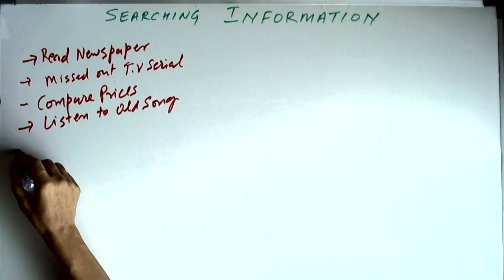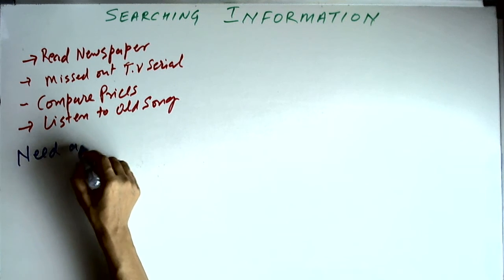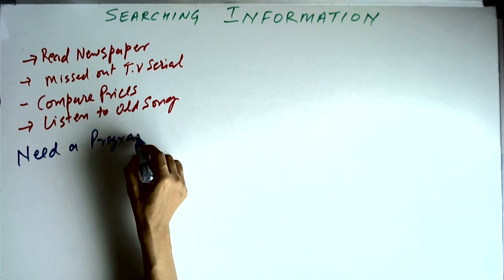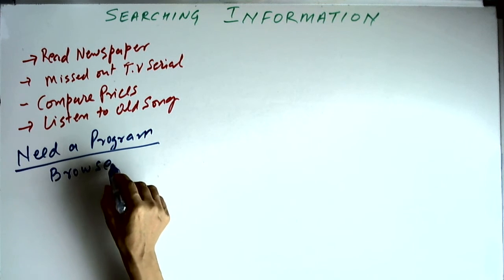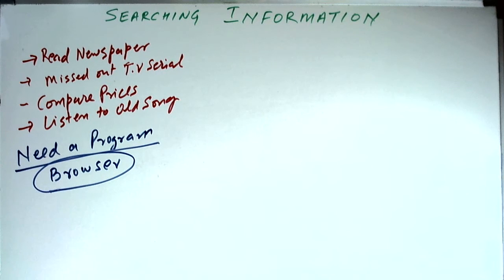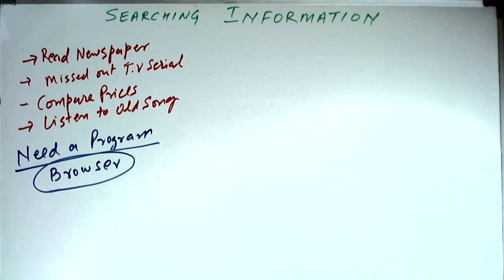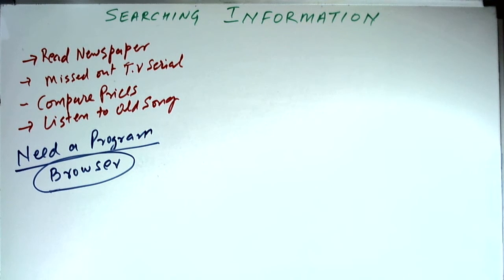Now for doing all these things you need a program, because you need to go to somebody else's computer. This program is called a browser. The name comes from the English word 'browse', so it is called a browser because it can browse computers all over the world. There are millions and millions of computers today all over the world providing information and selling things.